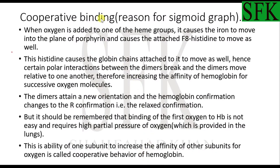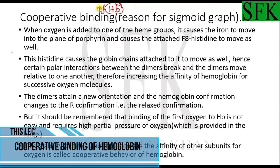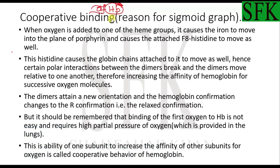Welcome back. In this lecture we are going to talk about the cooperative binding of hemoglobin to oxygen — the cooperative behavior of hemoglobin, what that is, how it influences the ability of hemoglobin to accept oxygen in tissues and in the lungs, and how it changes the structure of hemoglobin at different oxygen concentrations. We will look at each one of them one by one. What is cooperative binding, and the reason for the sigmoid graph — we'll come to these in a bit.